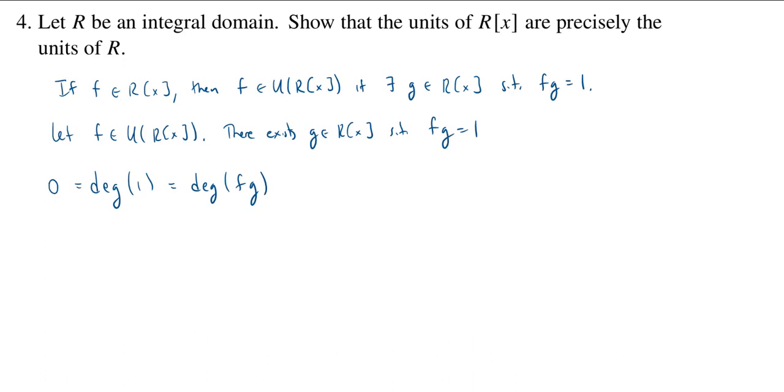But now 1 is equal to fg. And when we take the degree of a product of polynomials, we don't know anything about this, typically, if we just have some arbitrary ring. But if we have an integral domain, then we know that the degree of a product is going to be the sum of the degrees. So, this is where we're using that r is an integral domain.